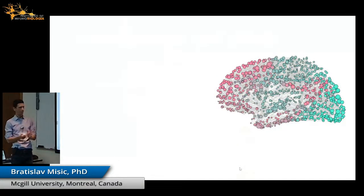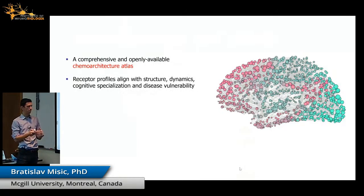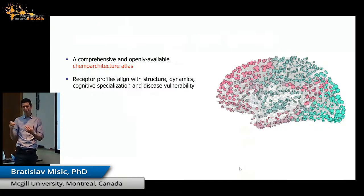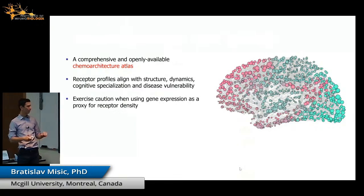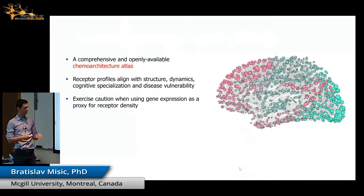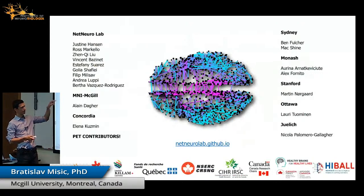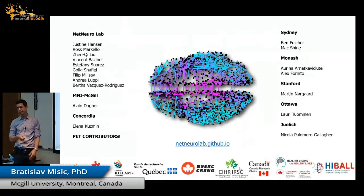In summary: we've presented a comprehensive, openly available chemoarchitecture atlas with evidence that receptor profiles align with brain structure, function, cognitive specialization, and disease vulnerability. Exercise caution when using gene expression as a proxy for receptor profiles. The Neuromaps toolbox allows you to take these maps and others, transform them, and work with them. Thanks especially to Justine Hansen and Ross Markello for their contributions, all those who shared PET data, our funders, and thank you for your attention.